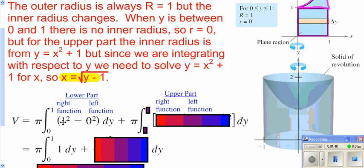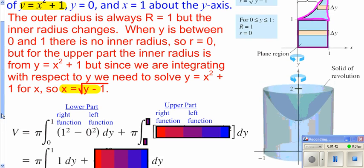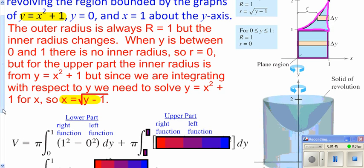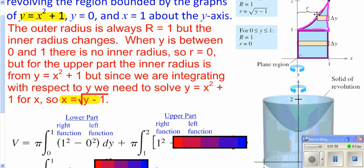When we look at the top part, we're revolving it from 1 all the way up to 2. We need to take the right function, which is the far right one — which is 1, because you're 1 unit over — minus the inner function here, which is just your curve. But that's what you get when you solve it, because you've got to have it with y's in it.